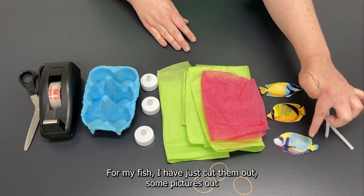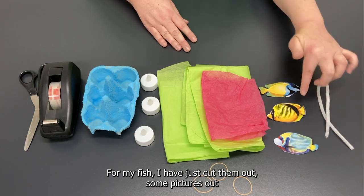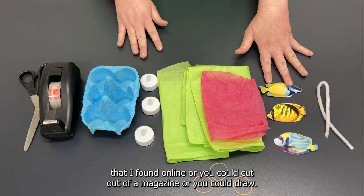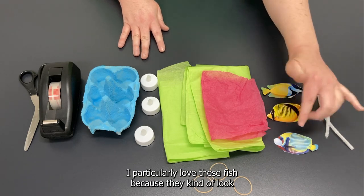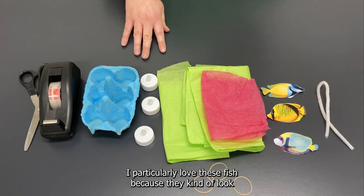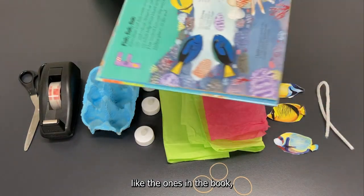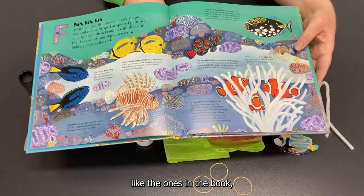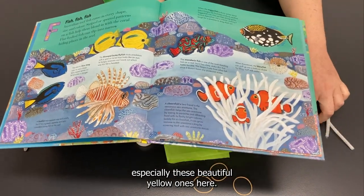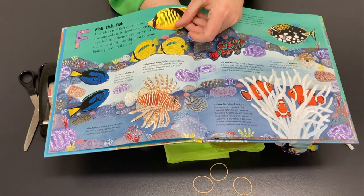For my fish I have just cut them out, some pictures that I found online or you could cut out of a magazine or you could draw. I particularly love these fish because they kind of look like the ones in the book especially these beautiful yellow ones here but it's up to you.